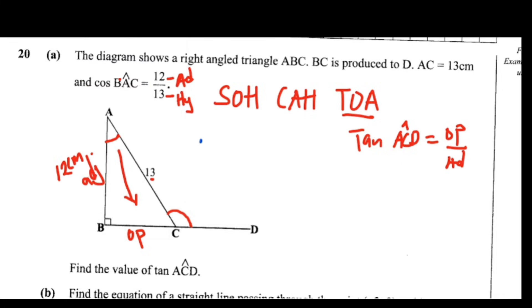To find BC, we are just going to apply the Pythagoras theorem. We are going to say 13 squared, which is the hypotenuse, minus the adjacent side there, which is 12 squared. So this will give us BC squared is equal to 169, because 13 squared is 169 minus 144.